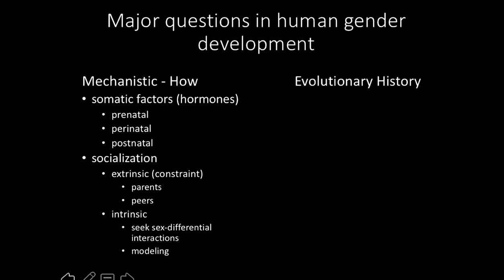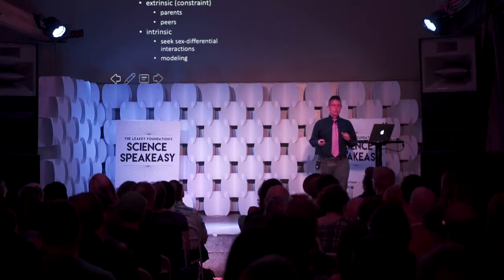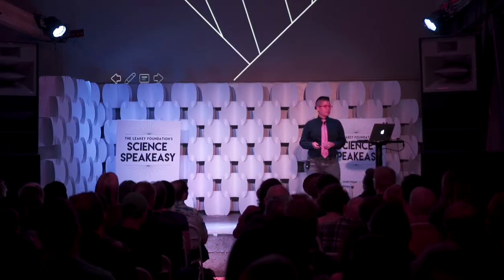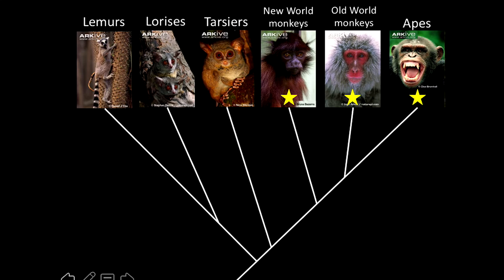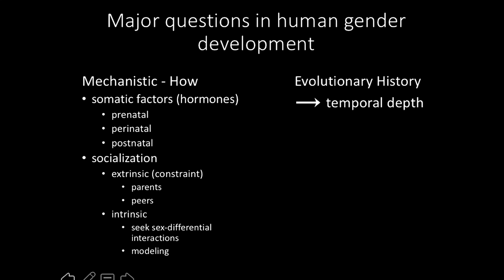The other really important thing we can learn from primates is about the evolutionary history of human gender behaviors and developmental processes. If new world monkeys, old world monkeys, and apes all share a hypothetical process of behavioral development, then the most reasonable inference is that it worked the same way in their last common ancestor. In that case, that developmental process would be evolutionarily ancient — in this example, 47 million years ago ancient. It's reasonable to think that behaviors with a very deep evolutionary history might be harder to change than those that arose recently.